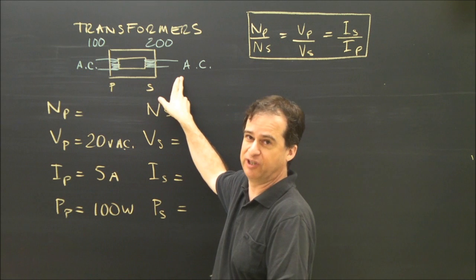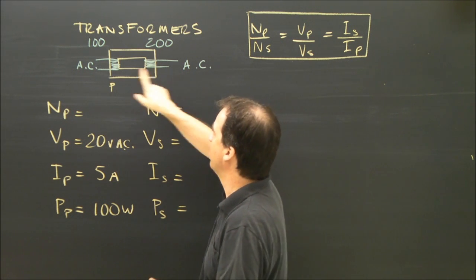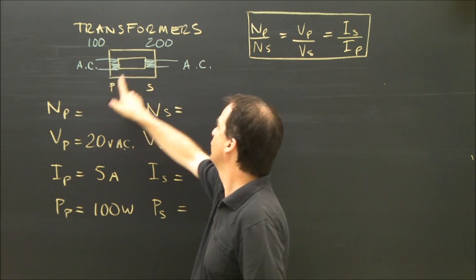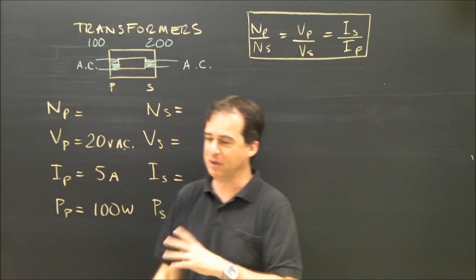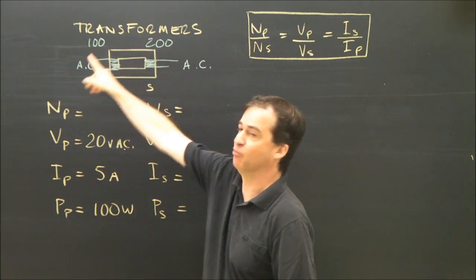It'll increase the voltage or decrease the current depending on how it's working. I have 100 turns on the primary coil and 200 turns on the secondary. That's a simple ratio and it may be a more complicated ratio, but the ratio here is 2 to 1.